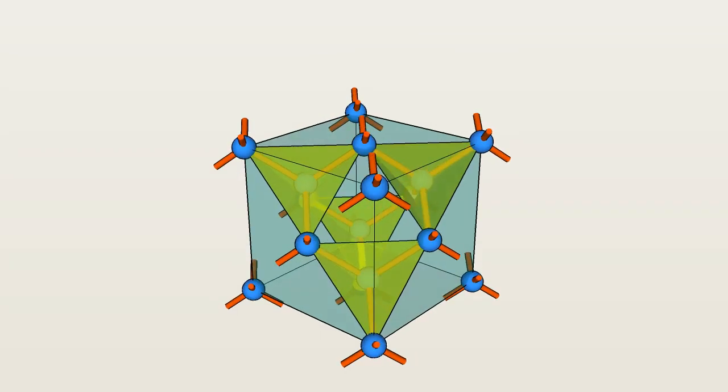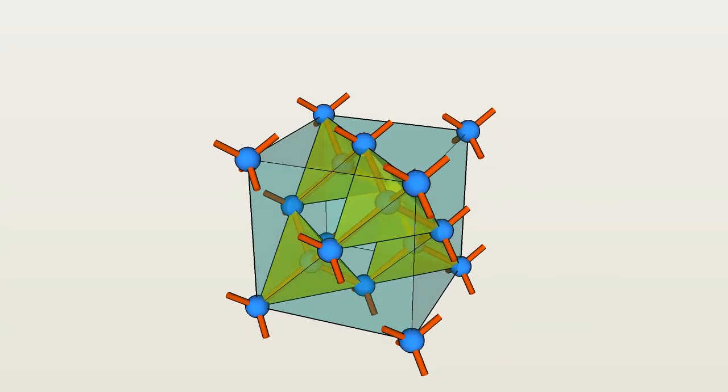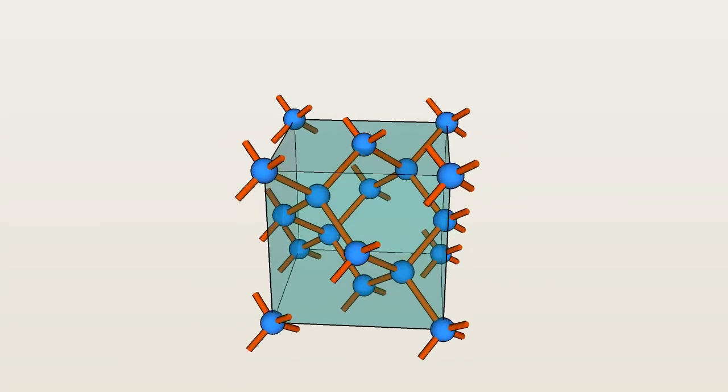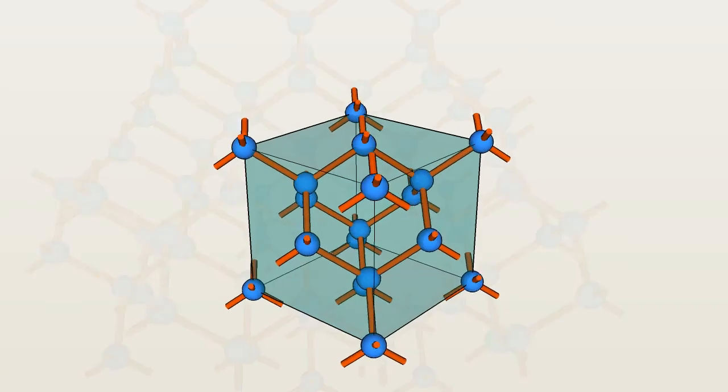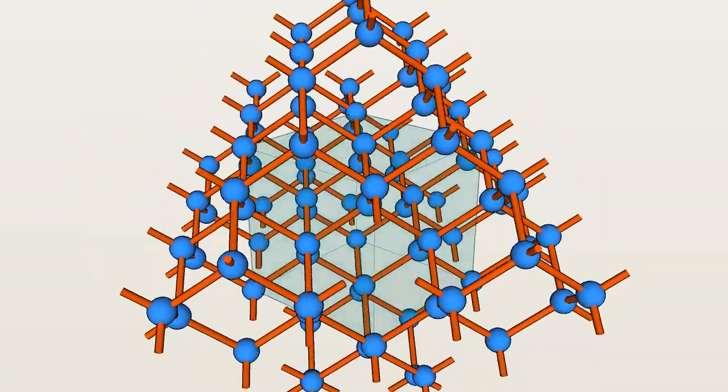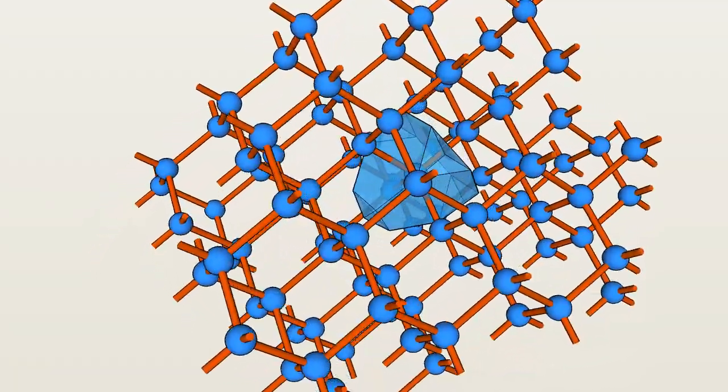These tetrahedra show you where the internal atoms are found. But there are more interesting shapes hiding in this structure. Here's one.